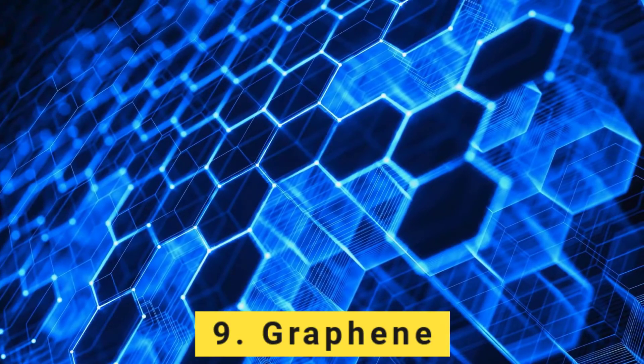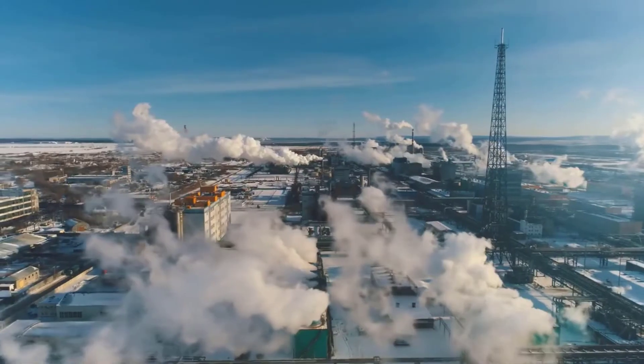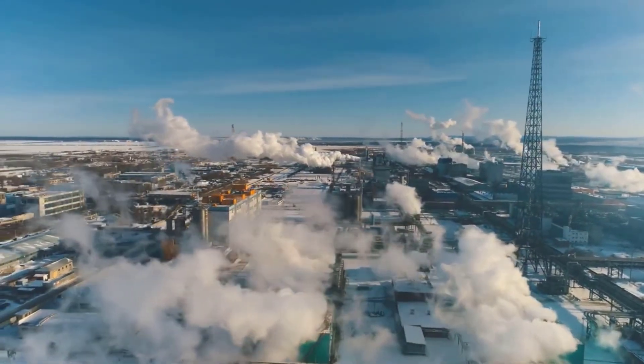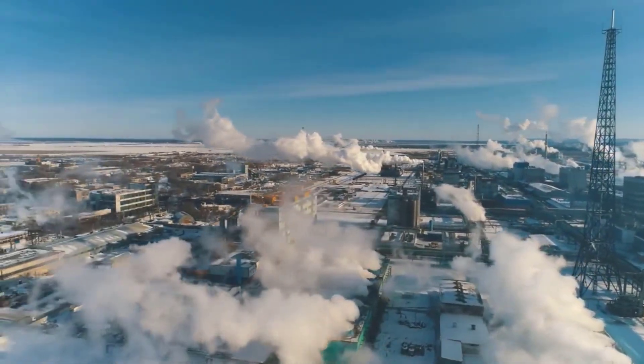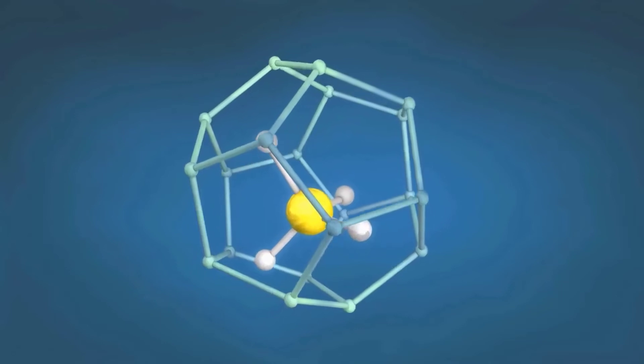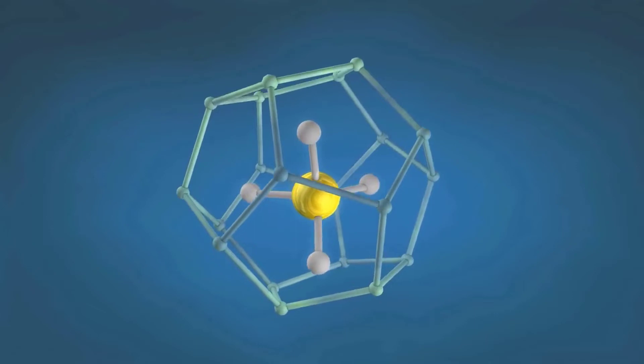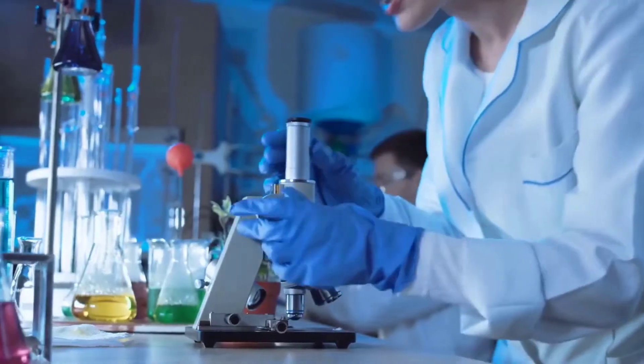Number 9: Graphene. Graphene is a one-atom-thick layer of carbon atoms arranged in a two-dimensional, hexagonal lattice. It is the basic structural element of other allotropes of carbon, such as graphite, charcoal, carbon nanotubes, and fullerenes. It can also be considered as an indefinitely large aromatic molecule, the ultimate case of the family of flat polycyclic aromatic hydrocarbons.